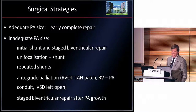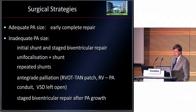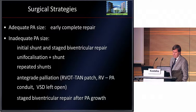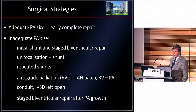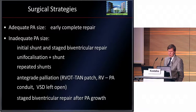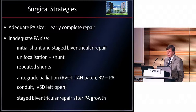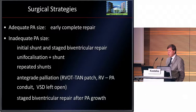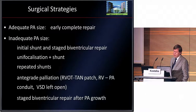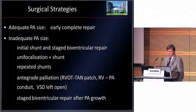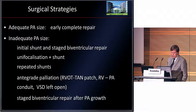If you have a unifocalized vessel — meaning a major collateral feeding a large part of the lung — you have to unifocalize this vessel also in the neonatal period. The patients very often need a repeated shunt, another antegrade palliation as a REOT transannular patch, or RVPA conduit as an interim palliation, to further increase the potential for growth of the pulmonary arteries before we can do the biventricular repair.